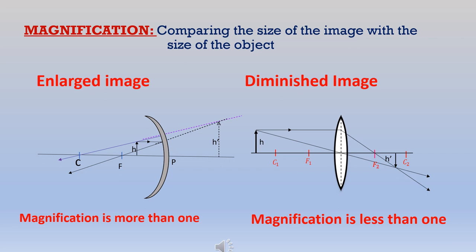Magnification. Magnification is studied in the case of mirrors as well as lenses. Magnification is a comparison of the size of the image with the size of the object. Wherever image formation occurs, magnification is also present. In the first diagram, we get an enlarged image — the object is small and the image is bigger, so magnification is more than one. In the second case, we get a diminished image — the object is bigger and the image is smaller, so magnification is less than one.